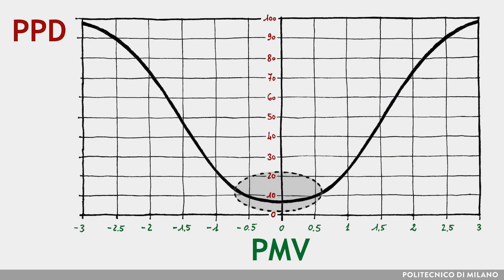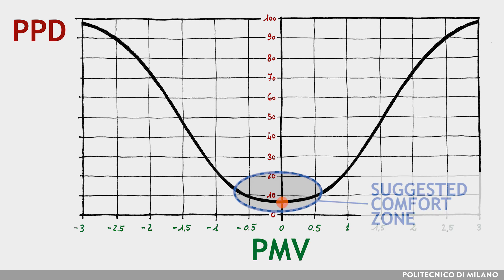Because of individual differences, it is impossible to obtain a thermal environment satisfying everyone. Even with PMV = 0, there is always a 5% dissatisfied.